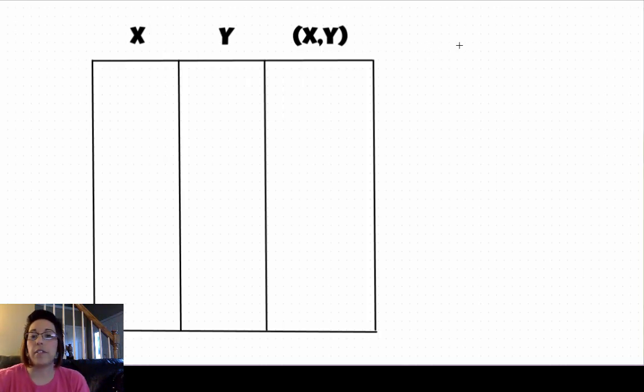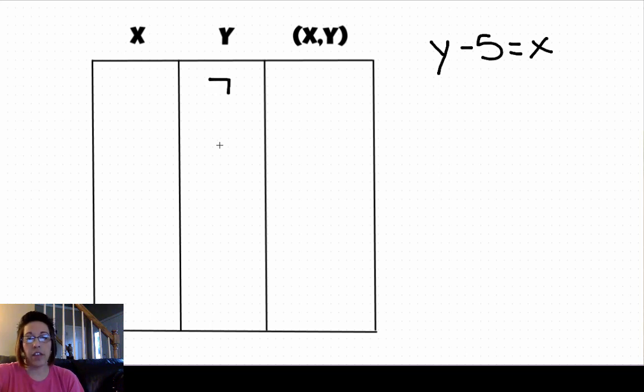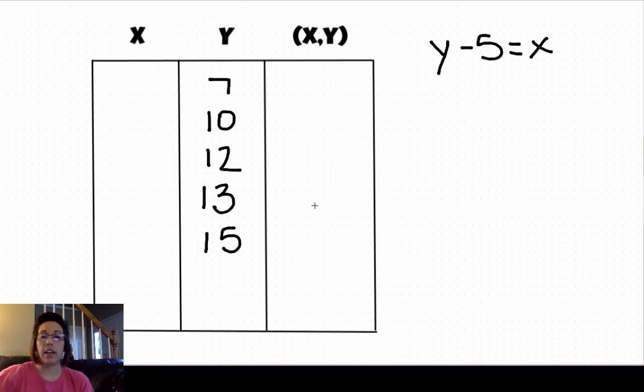For this practice on your own, I want you to try y minus 5 equals x. Let's go ahead and give y the values of 7, 10, 12, 13, and 15. On your paper, go ahead and complete your x values and your ordered pair. So pause the video now, and then come back and look at my work and see if we match.